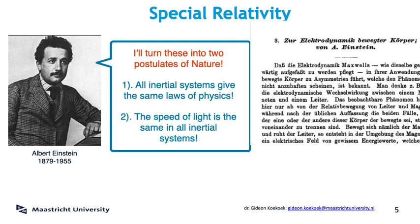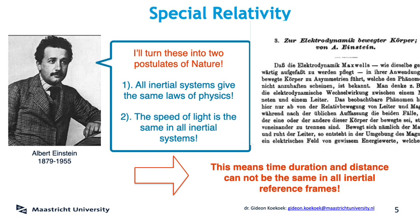It's well worth a read — he derives all of special relativity using Maxwell's equations, hence the title. Famously, he did not use the Michelson-Morley experiment that measured that the speed of light is the same in all inertial systems. He was aware of the experiment but didn't need or use it in his derivation — he put all his trust in Maxwell's equations. The most striking result of Einstein's paper is that the amount of time and the amount of distance cannot be the same in different inertial systems. Space and time are stretchable. Let's derive some of these results now.